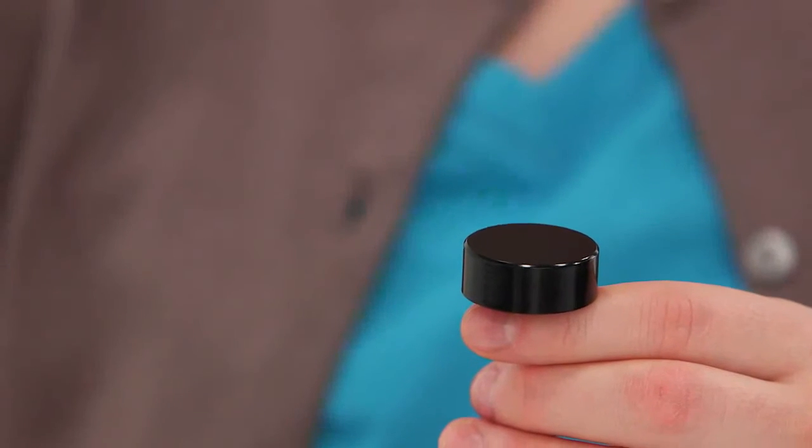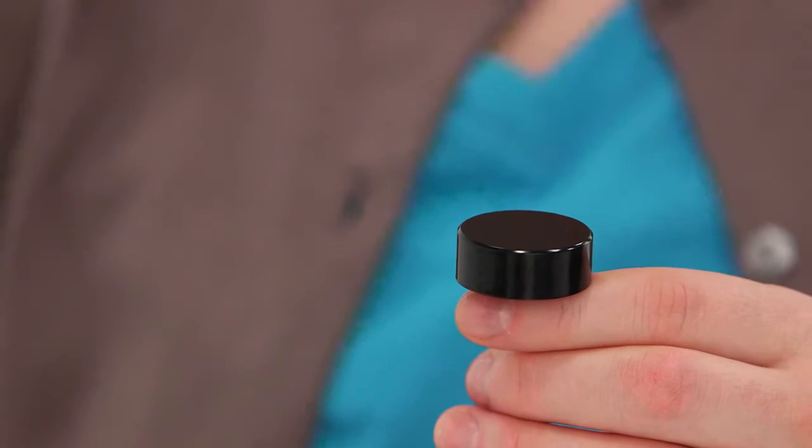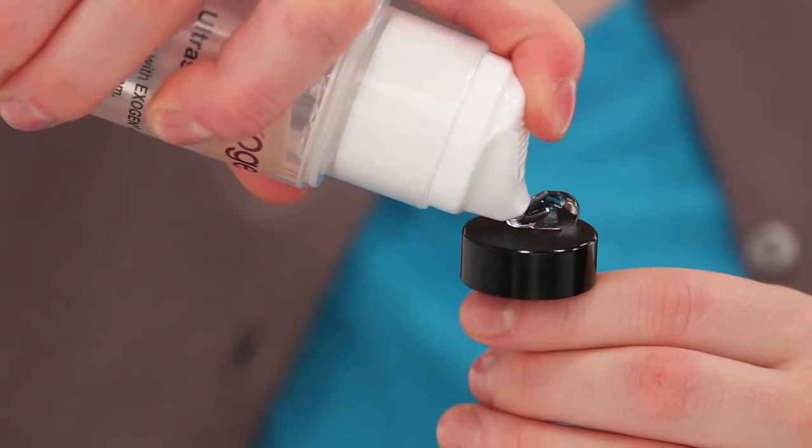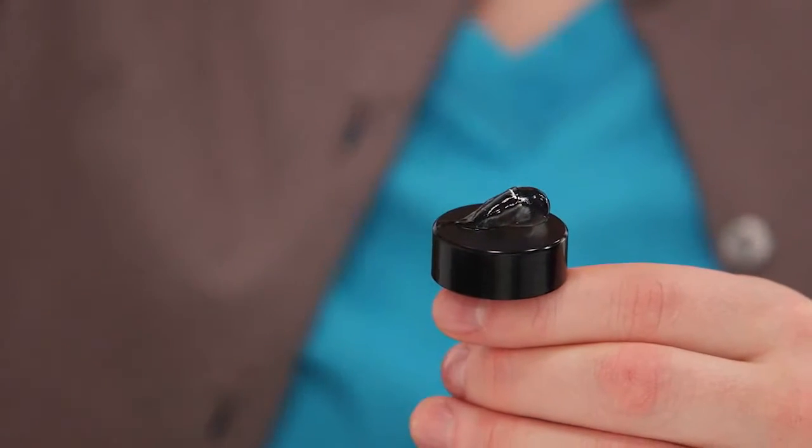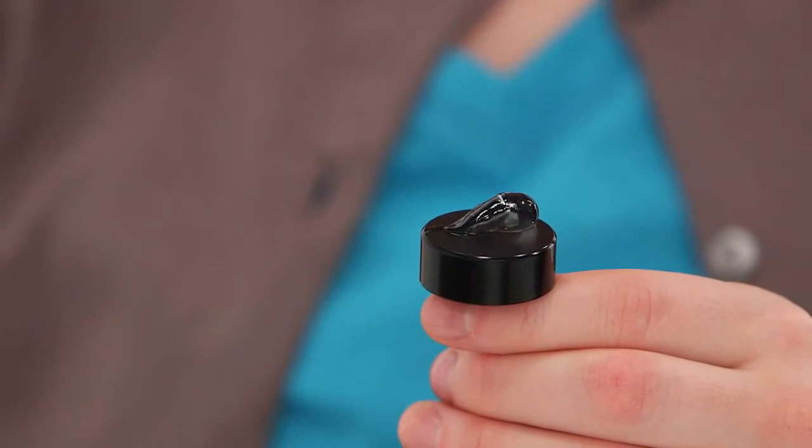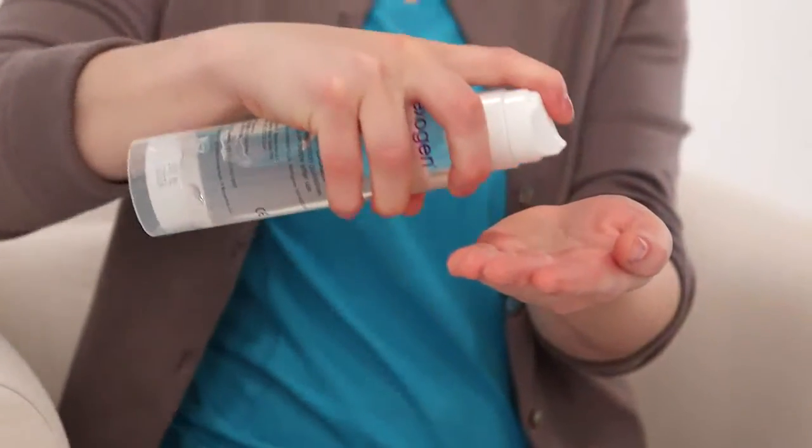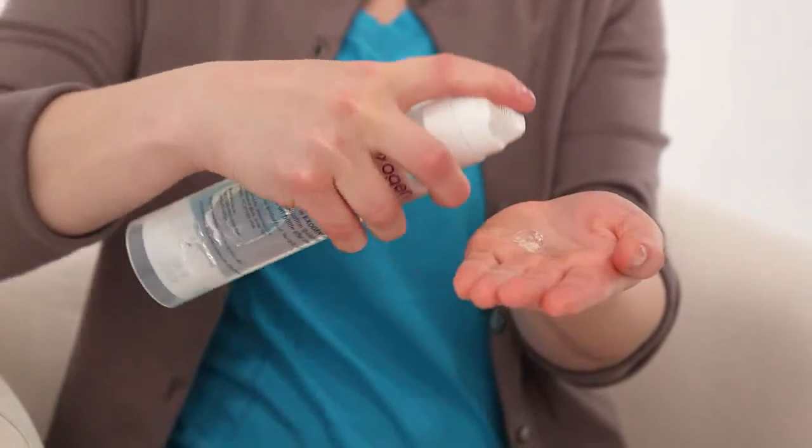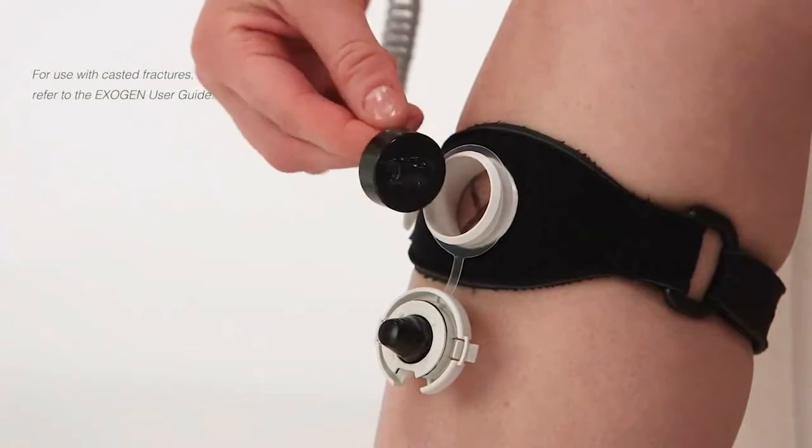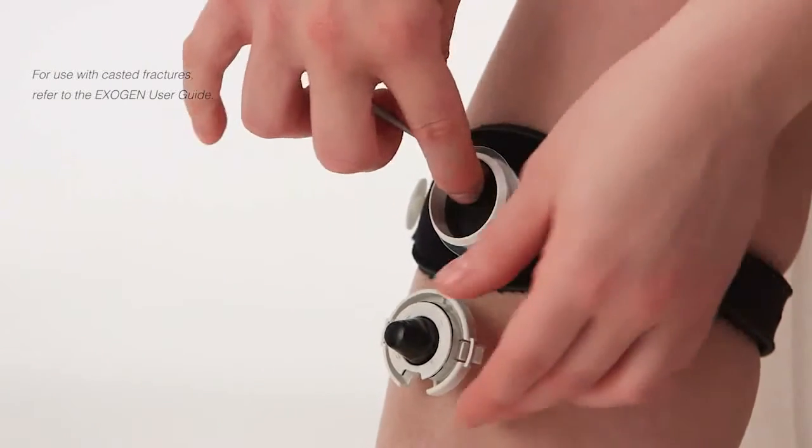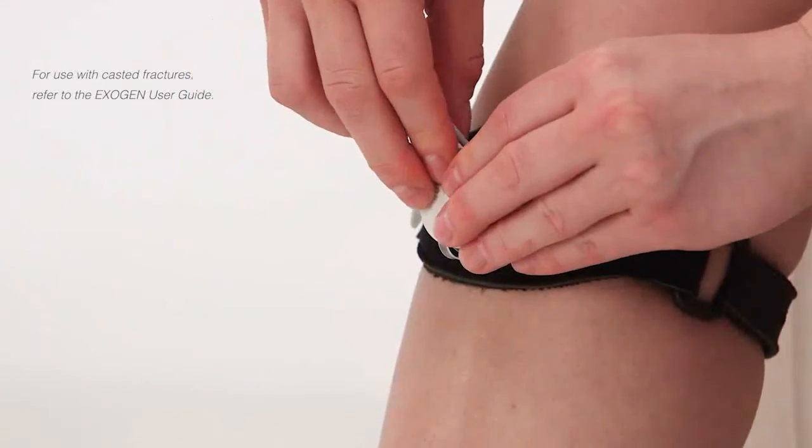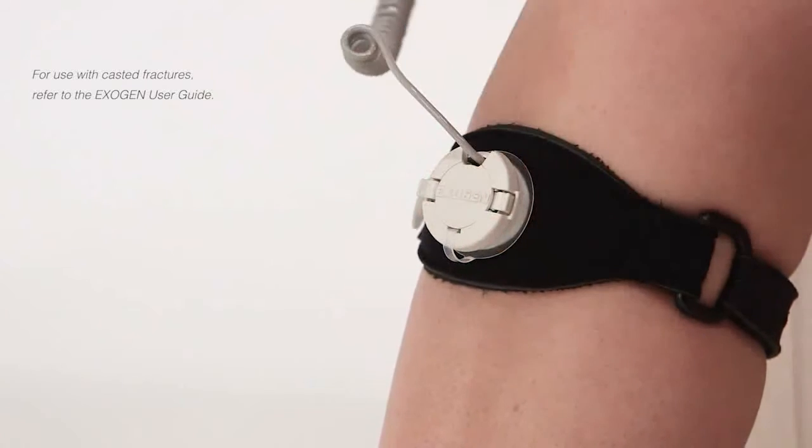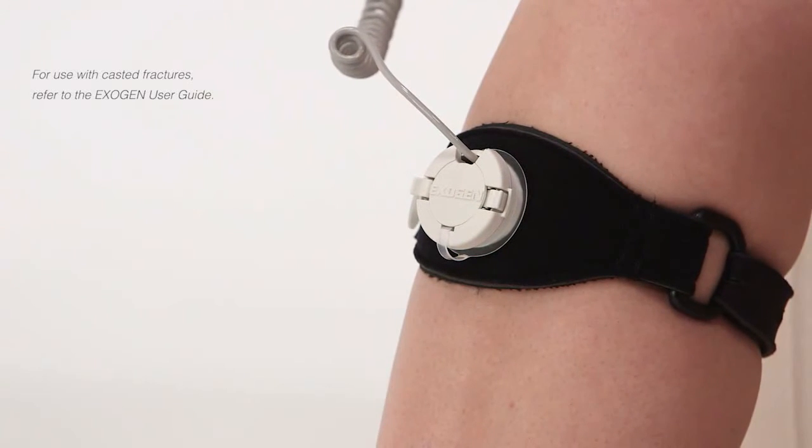To apply the gel, hold the transducer with the cord down and smooth side facing up. Press down on the gel bottle nozzle to deliver one full pump of gel onto the transducer. If this is the first time using the gel bottle, it may take several pumps before the gel is expressed. Place the transducer, gel side down, into the port so the gel is touching the skin over your treatment site. Place the transducer cord into the notch so the cord comes out of the cap and snap it shut.